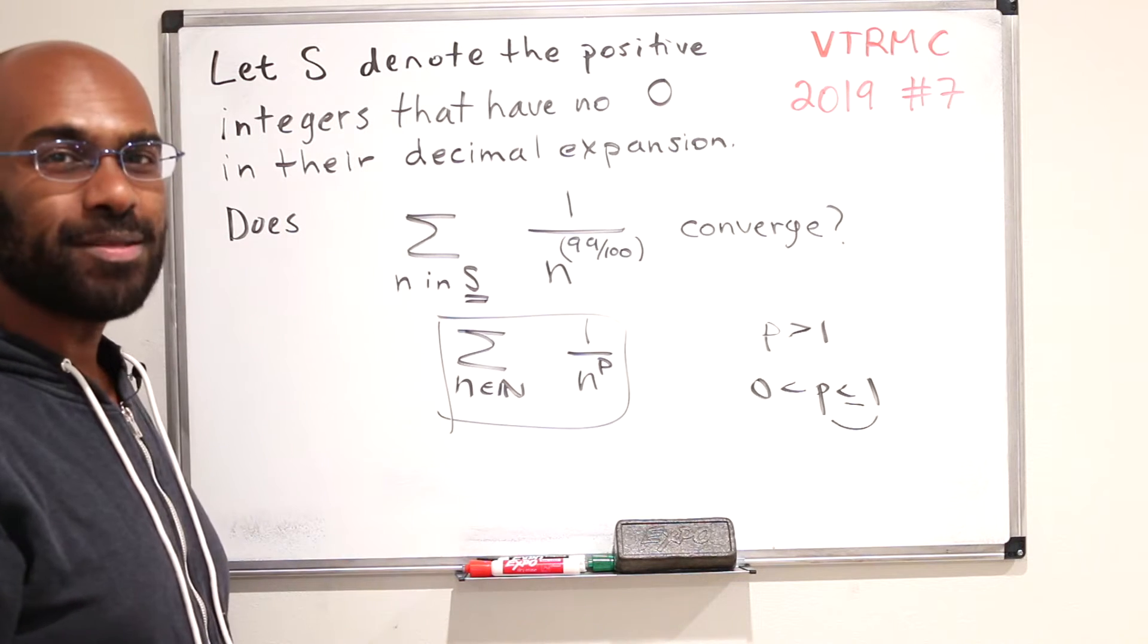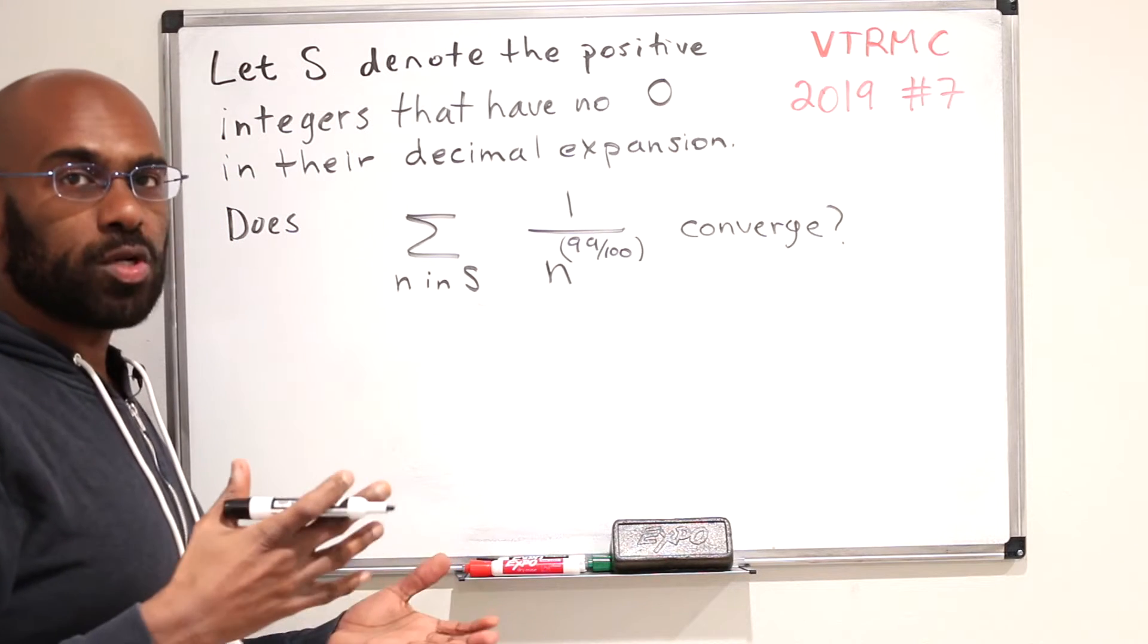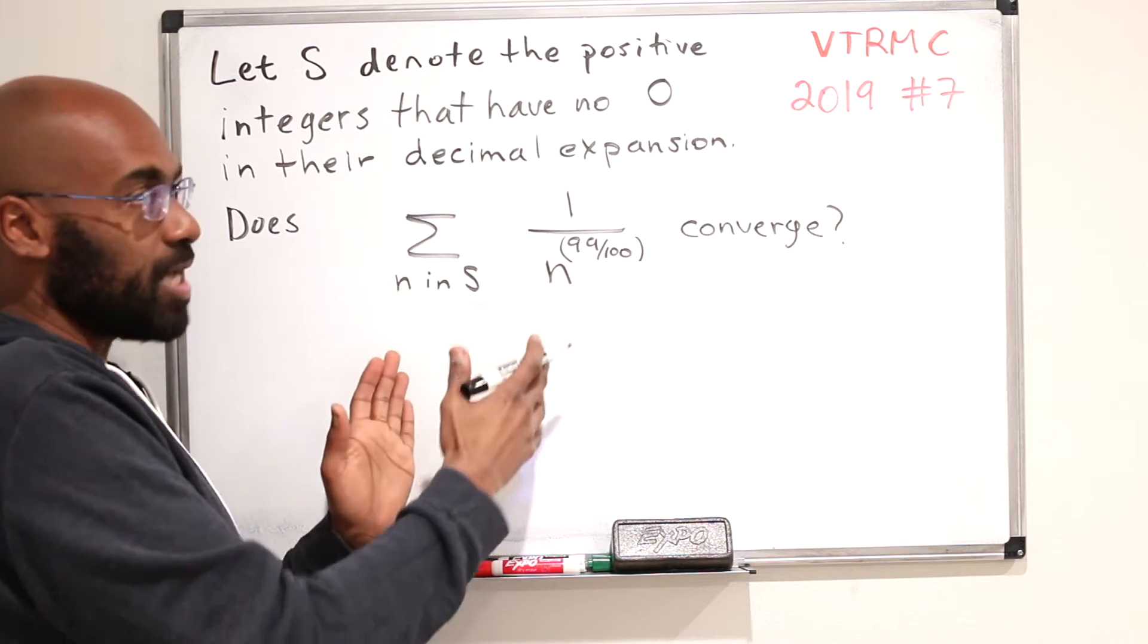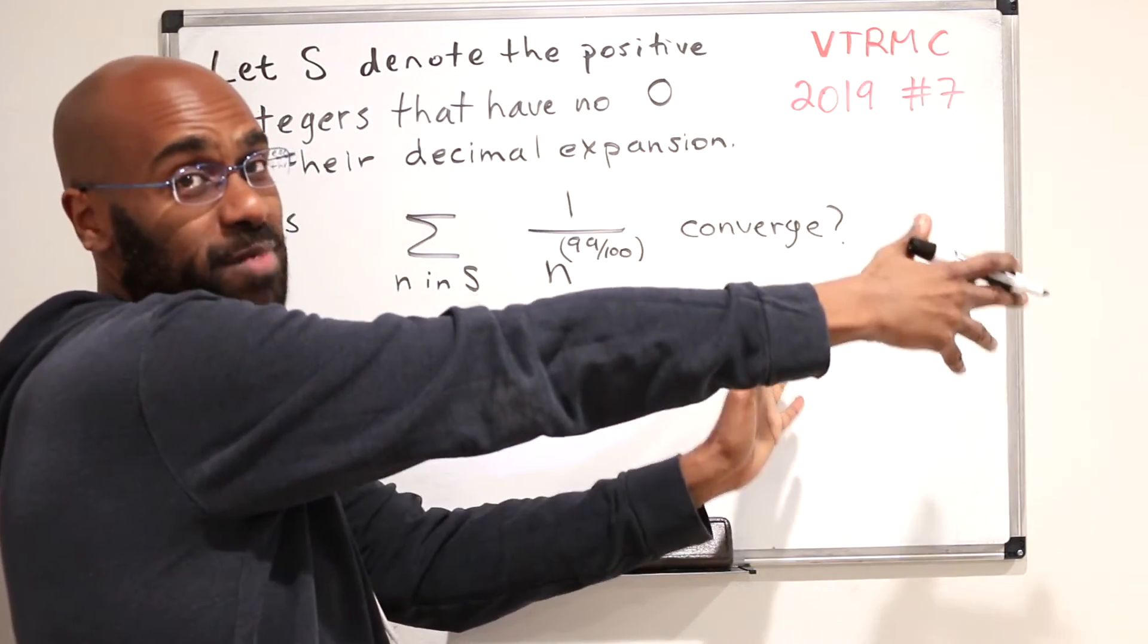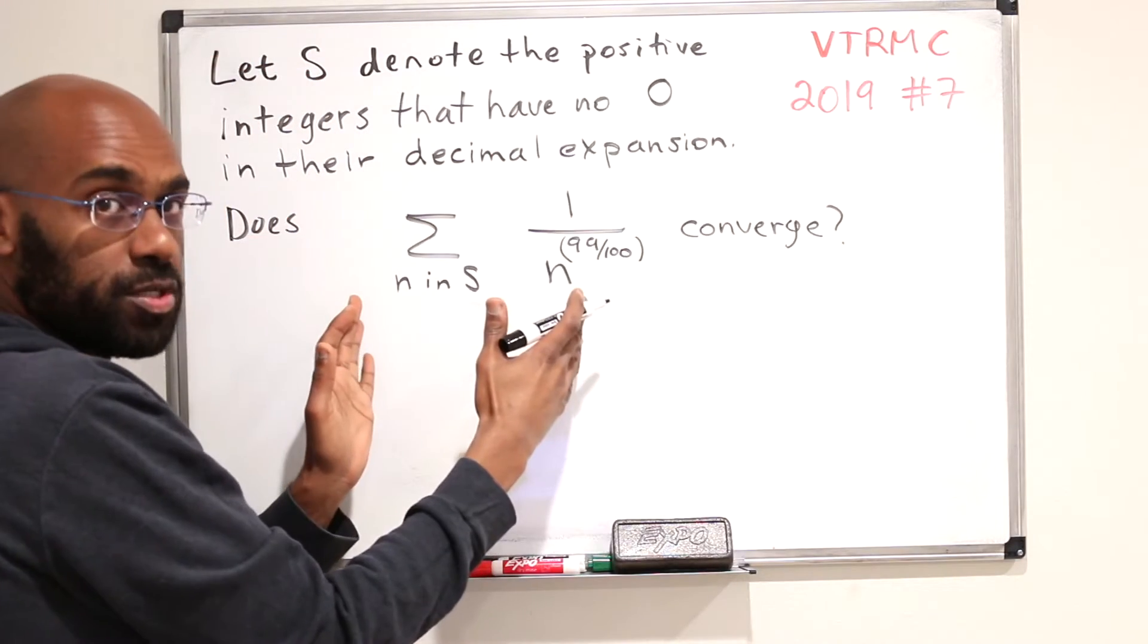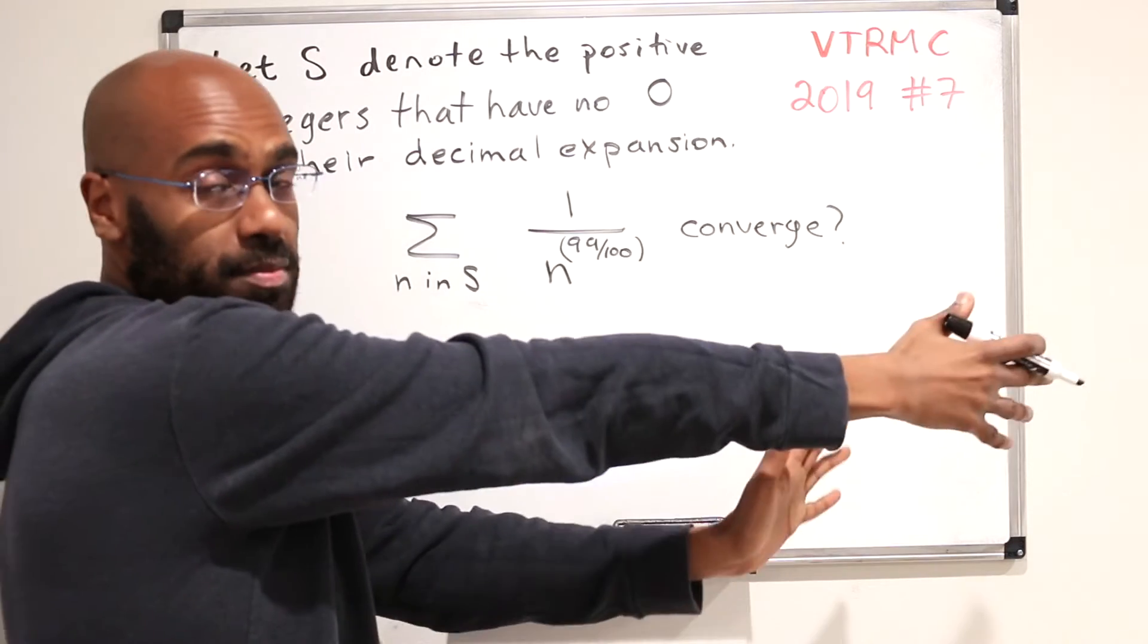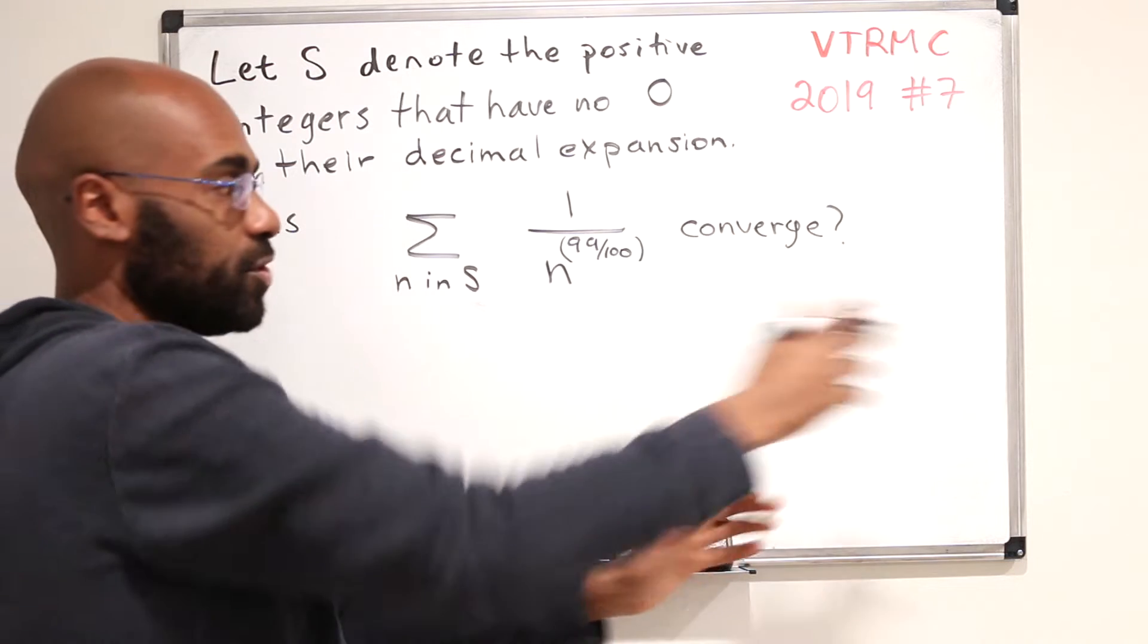Let's go ahead and dive into the problem. One thing that we can try to do is a dual game. We can either try to bound this above by something and hope that that thing we bounded above by converges, and then by the comparison test, this series will converge. Or we can bound this below by something that diverges, and then by the comparison test, this thing will diverge.